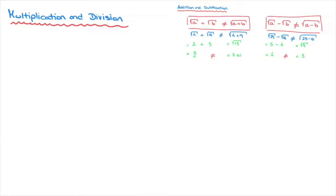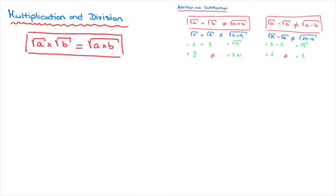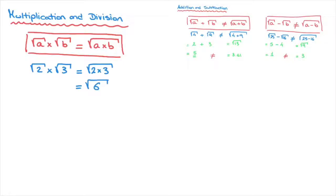I'll start with multiplication. When multiplying two square roots, say the square root of a times the square root of b, it will always be equal to the square root of a times b. This is a really important result — make a note of it if you are unfamiliar with it. For example, the square root of 2 times the square root of 3 equals the square root of 2 times 3, which equals the square root of 6.